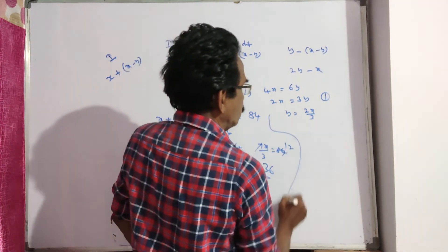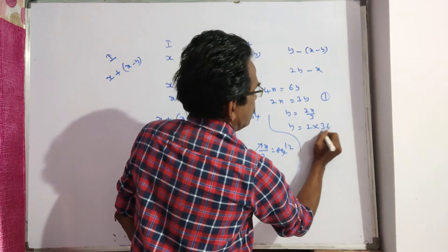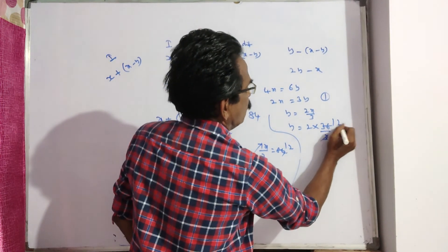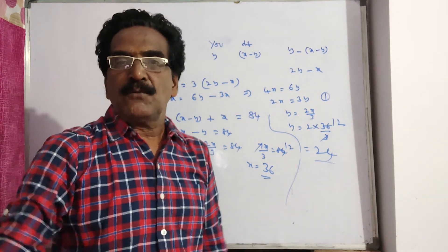Now, let us substitute X is equal to 36 here to get Y. 36 by 3, 3 times 12, 2 times 24. So, I am 36, you are 24.